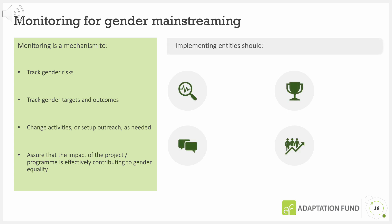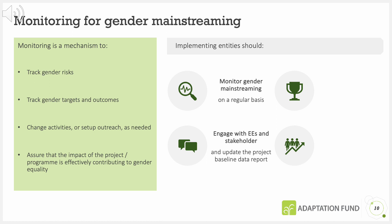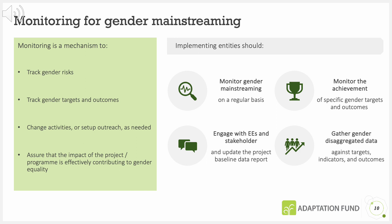Implementing entities are required to monitor gender mainstreaming on a regular basis, engage with implementation partners such as the executing entities and continue stakeholder engagement as needed, and report on their findings via their project baseline data report. They must also monitor gender risks and the achievement of specific gender targets and gender responsive outcomes, gather gender disaggregated data against the quantitative gender responsive targets and indicators, and submit annual PPR and MTR when applicable, informing detailed project or programme progress, specifically in the Gender Policy and Lessons Learned sections.